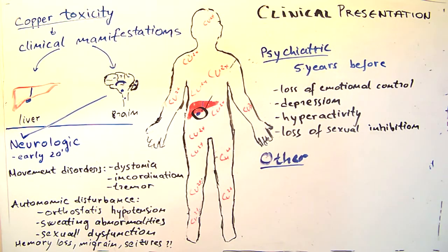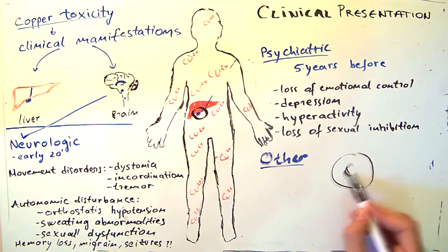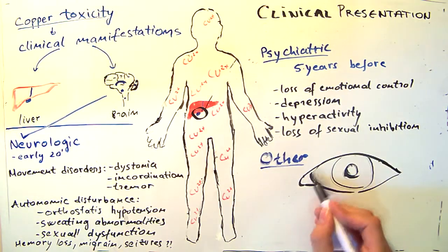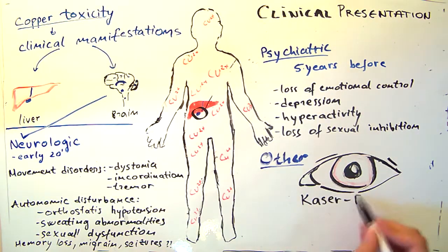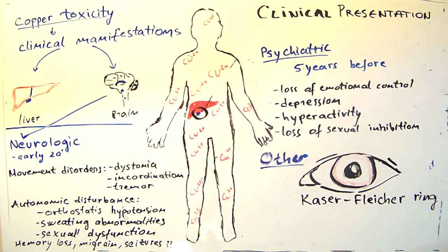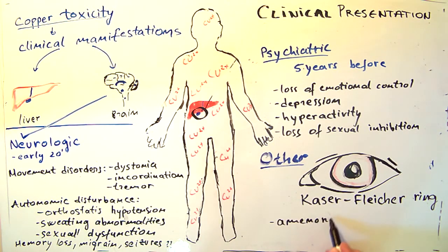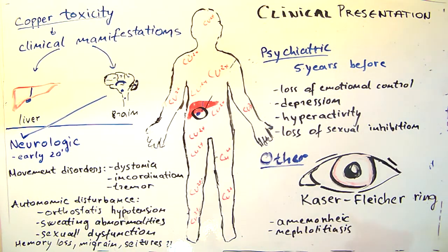There are other symptoms outside of the brain and liver in Wilson's disease. One of the most well-known signs, which is very specific to the disease, is the Kayser-Fleischer ring. It happens as a result of copper deposits in the outer rim of the cornea, here represented with a red color. Female patients may have repeated abortions or present with amenorrhea. Also, there might be patients who present with nephrolithiasis or osteoarthritis.